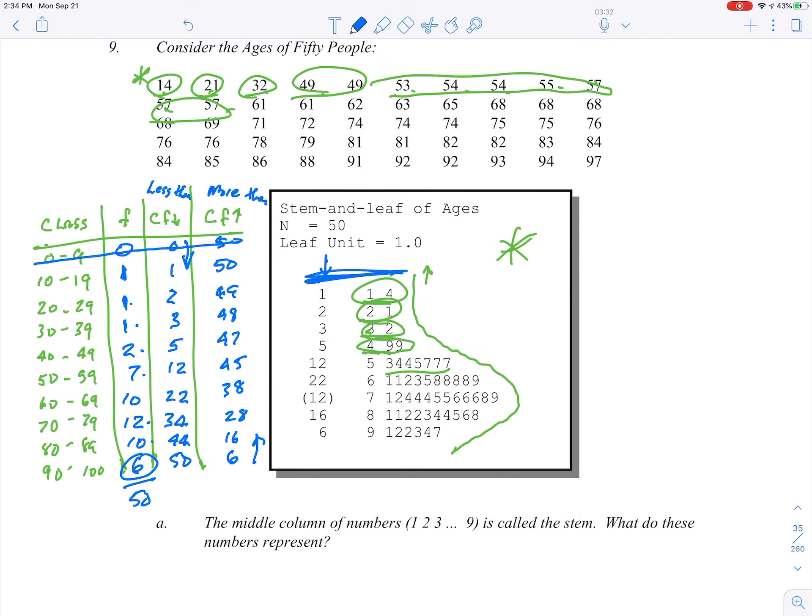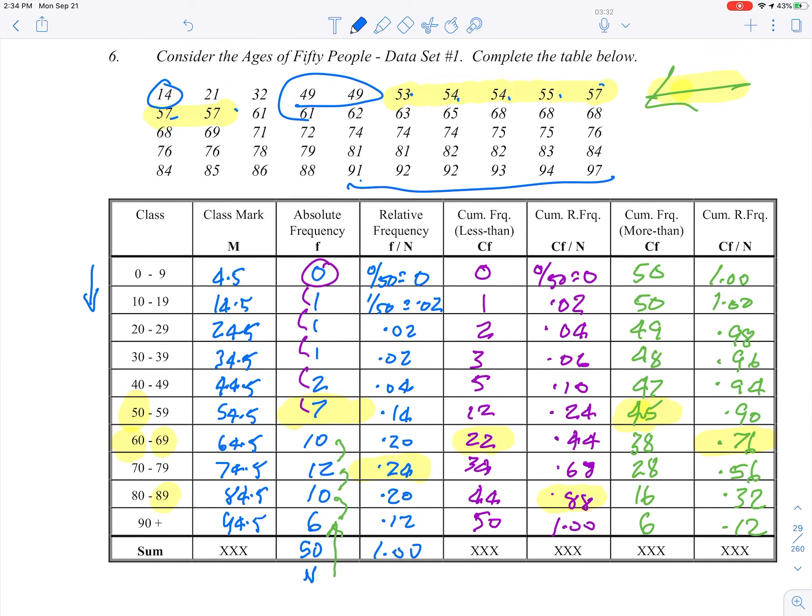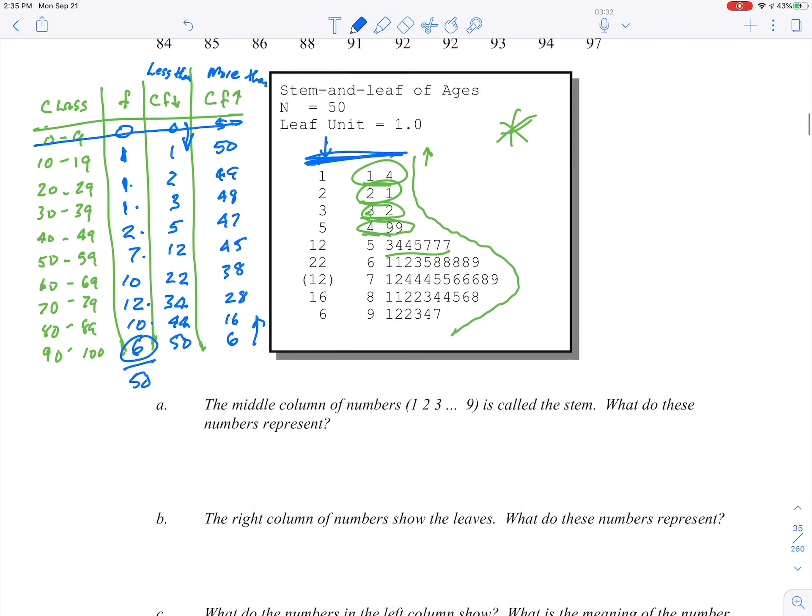Where have we seen those guys before? There we go. So this is what we've just taken a look at here. We had our frequency column, the absolute frequencies, and then the less than cumulative frequencies, and then the more than cumulative frequencies. So we've taken a look at that. That was page 29. So let's now go back. There we go.